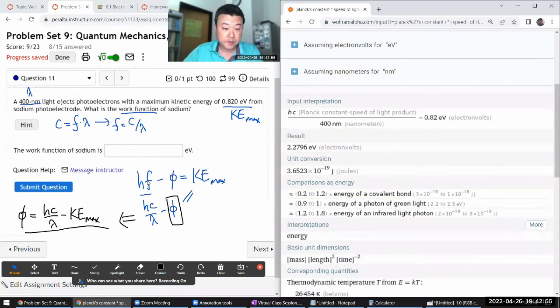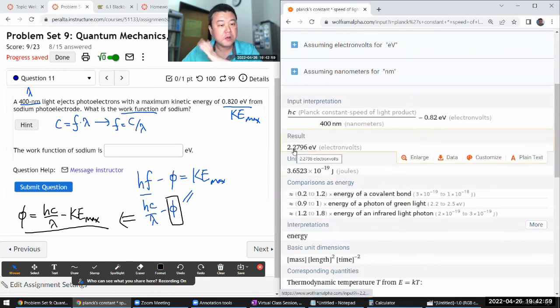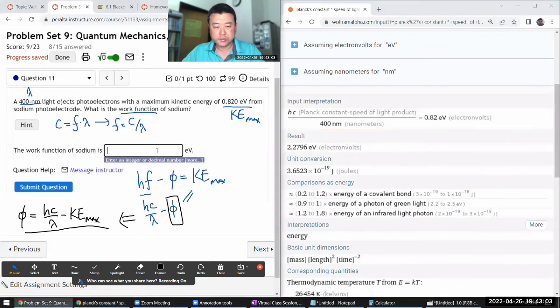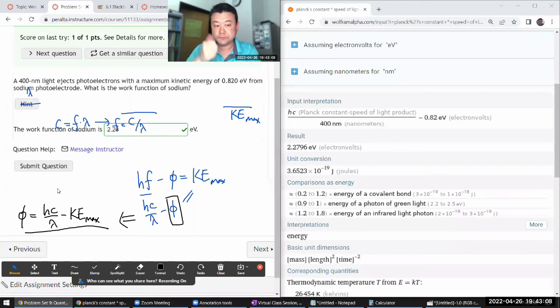Good. The answer here should be positive the way it's written here, is intended to be a positive answer. So work function of the sodium should be 2.28 electron volts. Yeah, good.